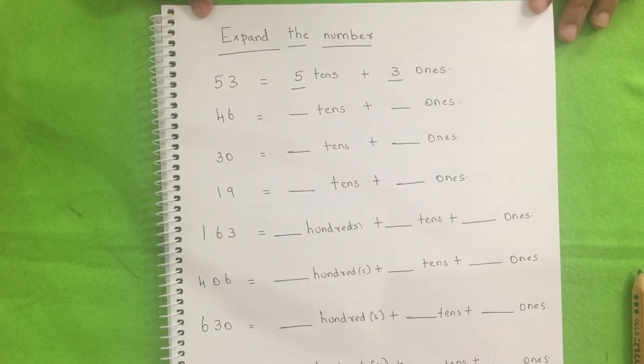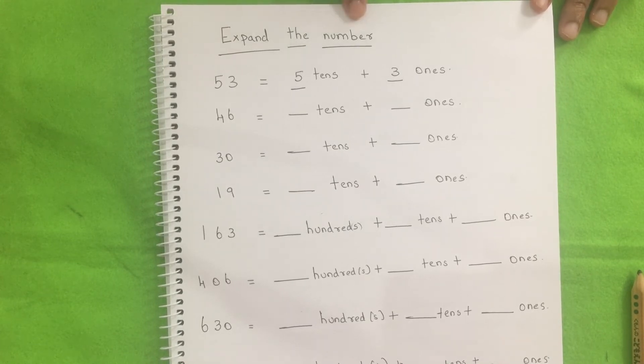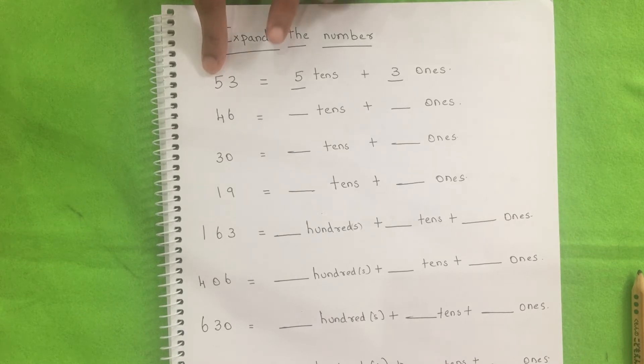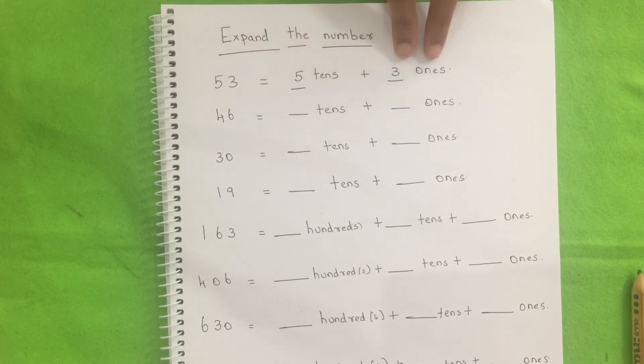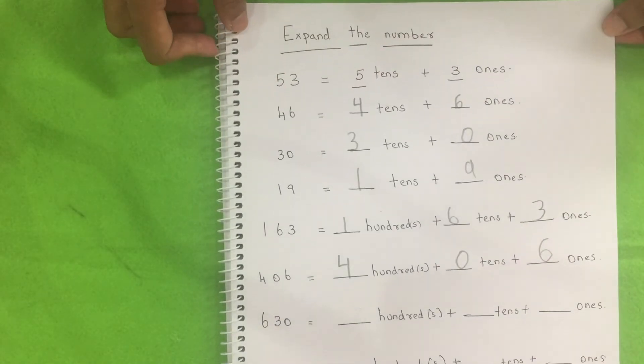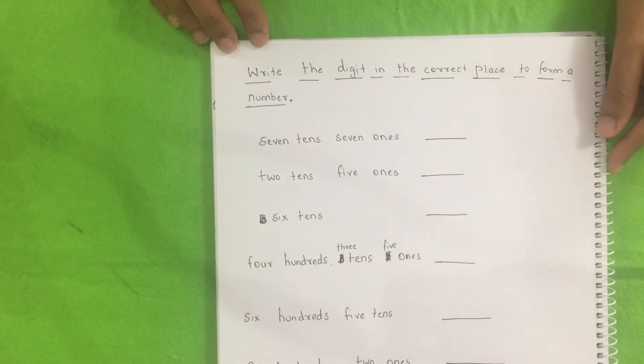So the next is just the same like the previous one where he just needs to expand the number into tens, hundreds and units place. So for example, here I have given the number as 53. So he needs to find out how to make 53 within place values. So here it will be five tens plus three units makes the number 53. So are you ready Papa? Yes.